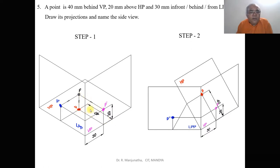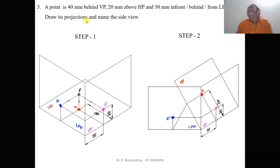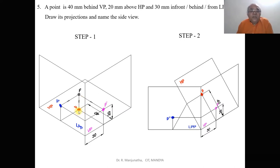When you look from the top view, the distance behind LPP is also seen in the horizontal plane. So behind VP is seen in HP — the image falls on HP. Whatever image is in HP is the top view; whatever image is in VP is the front view. Now we need to rotate this three-dimensional drawing to make it orthographic — that is, two-dimensional.